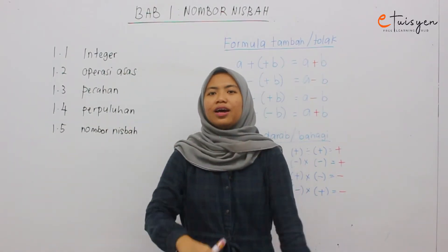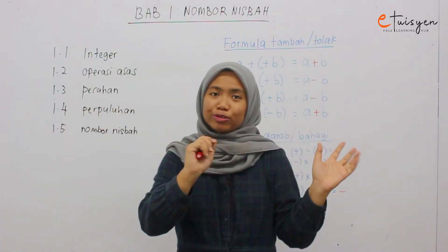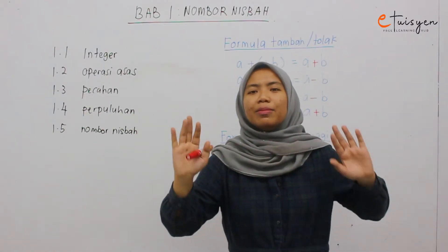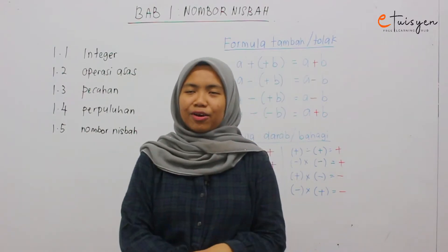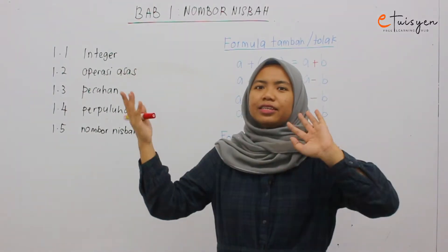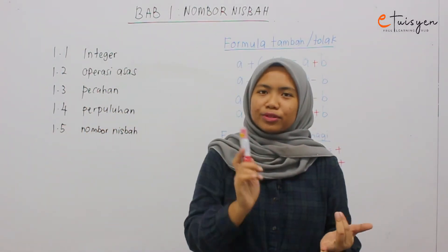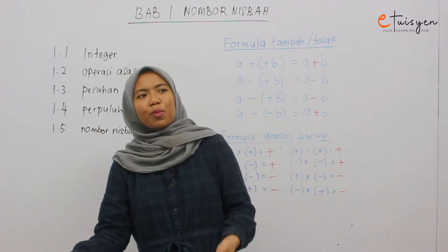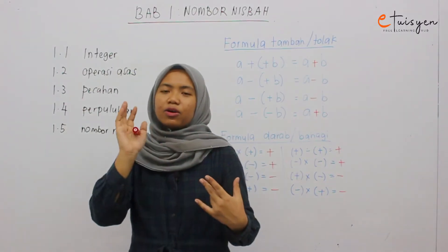Untuk sambung apa yang kita dah belajar dalam video sebelum ni, kita masih lagi di dalam Bab 1, yang bertajuk Nombor Nisbah. Hari tu kita dah belajar integer — kita kenal apa itu nombor negatif dan apa itu nombor positif. Nombor negatif adalah nombor yang kurang daripada kosong, dan nombor positif adalah nombor yang lebih daripada kosong.